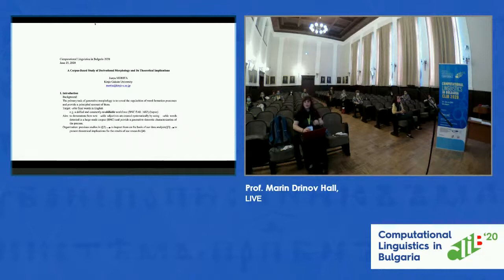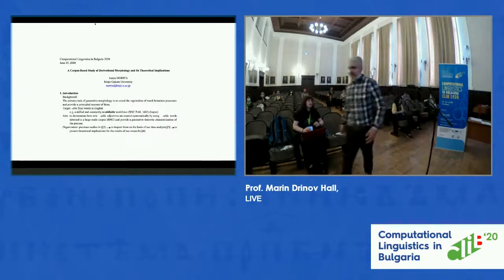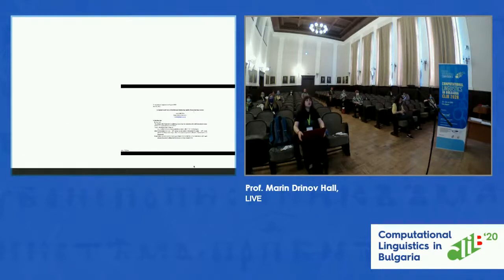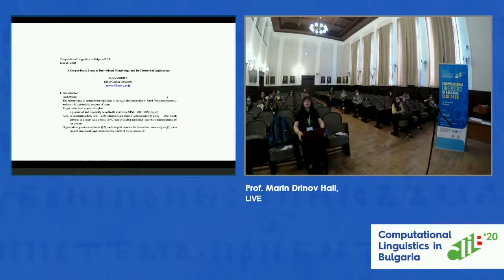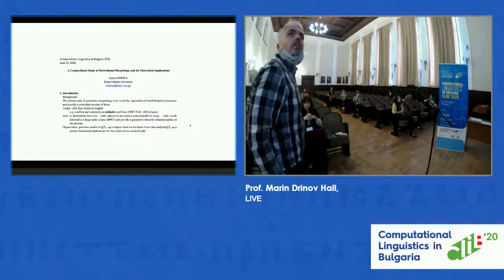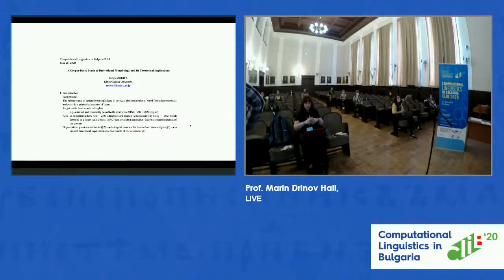The present study attempts to show how the system works in producing -able words in English, exemplified in a skilled and constantly reskillable workforce. The adjective has a modalized passive sense of 'can be reskilled,' and it is a hapax with frequency one in a large corpus, constructed online without being stored in the lexicon. The aim is to demonstrate that new -able adjectives are created constantly and systematically, verified by inspecting hapaxes detected in large-scale corpora.